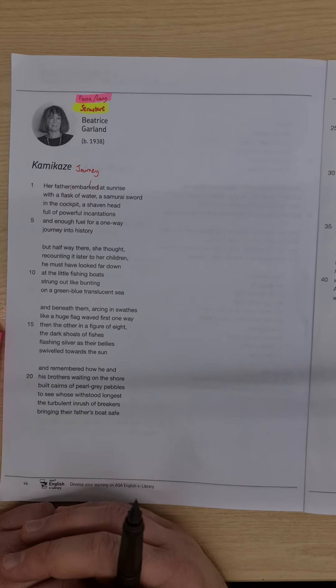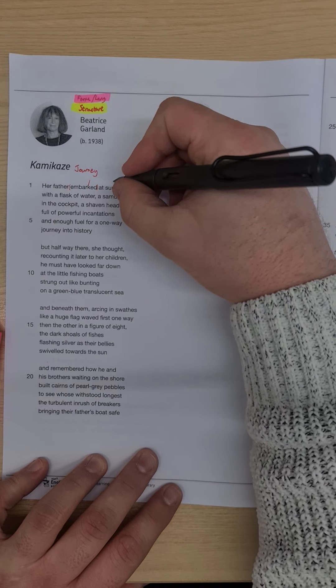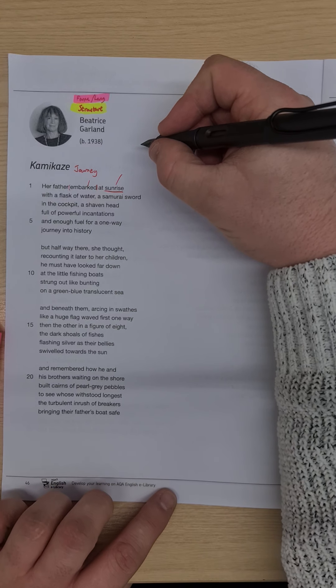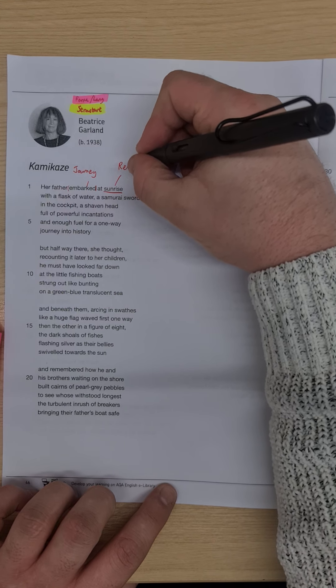He began at sunrise. So the fact that this poem begins at sunrise may be some kind of reference to Japan being referred to as the land of the rising sun. So this may be a reference to the location.